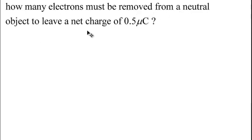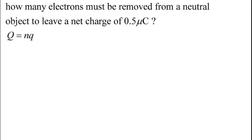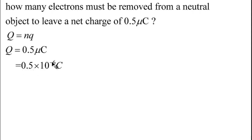One more question: How many electrons must be removed from a neutral object to leave a net charge of 0.5 microcoulombs? In this question we are not looking for the total charge — we are given the total charge — but we are looking for the number N. From the formula Q = N × e, our total charge is 0.5 microcoulombs, which equals 0.5 times 10 to the power of minus 6, and the constant e is 1.6 times 10 to the power of minus 19.